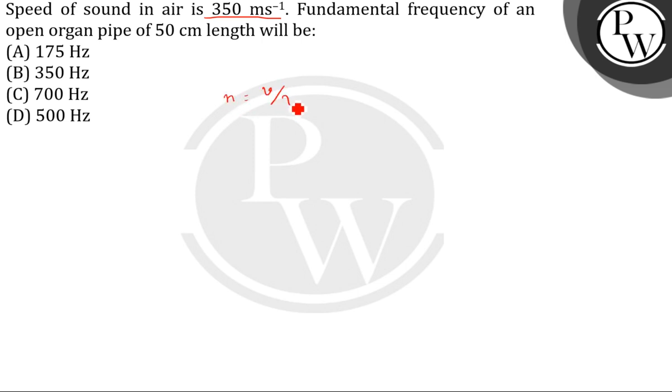We know that n equals v divided by lambda, and lambda here is twice L. V is the speed of sound.